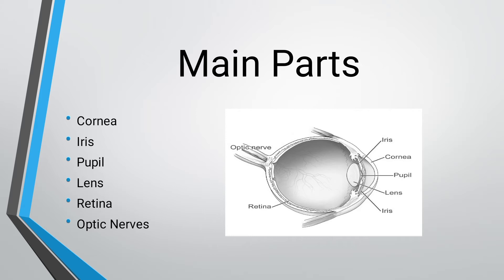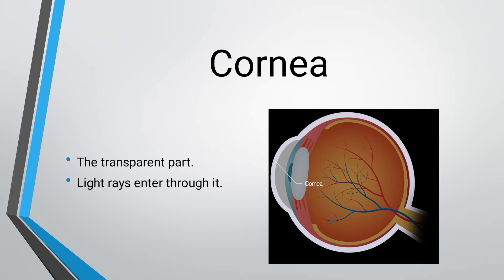Now we move towards the functions of these parts. The cornea is the transparent part at the front of our eye. Light rays enter through it. The white part is the transparent part of our eyes, and light rays enter into the eye through the cornea.